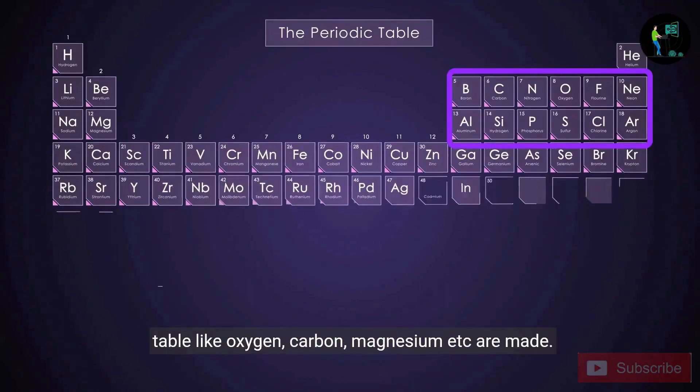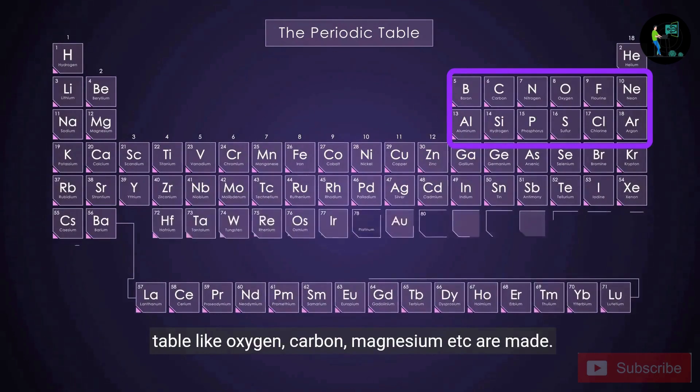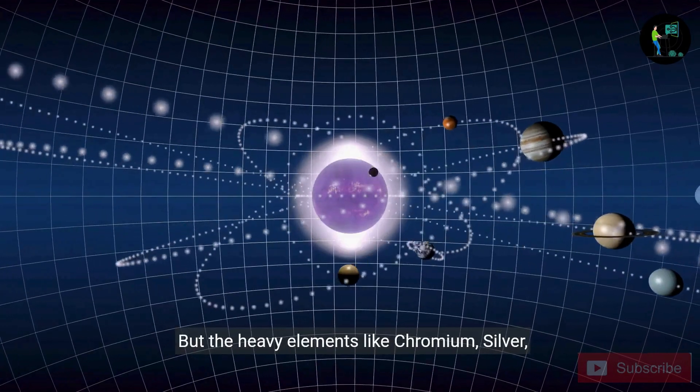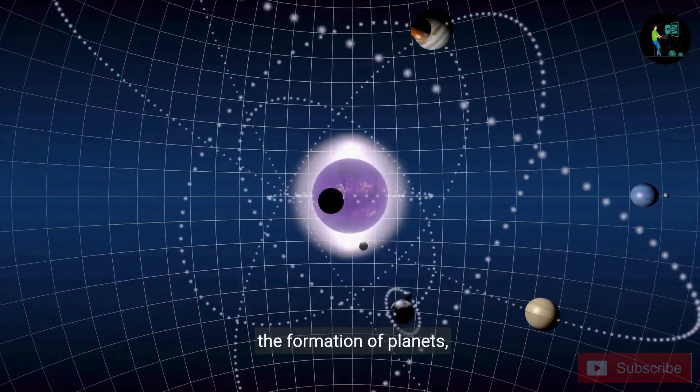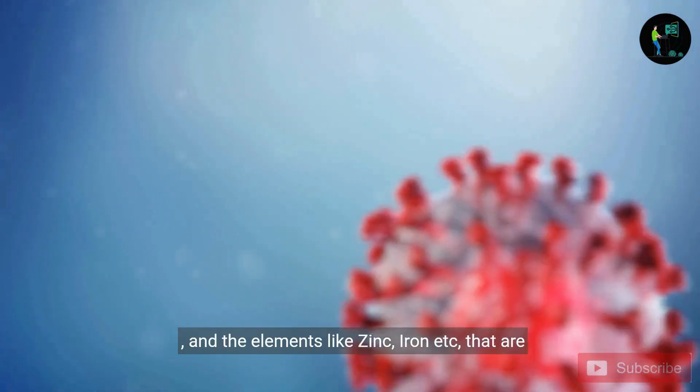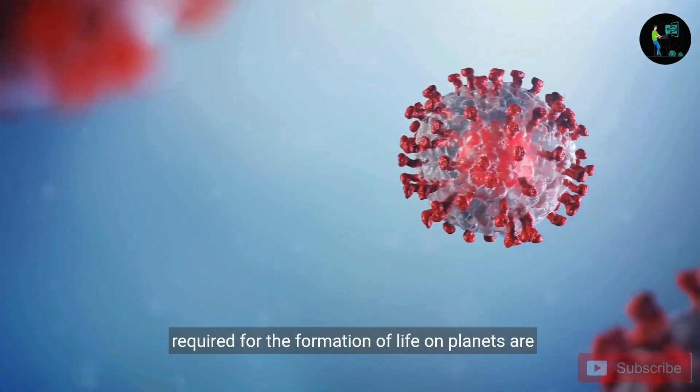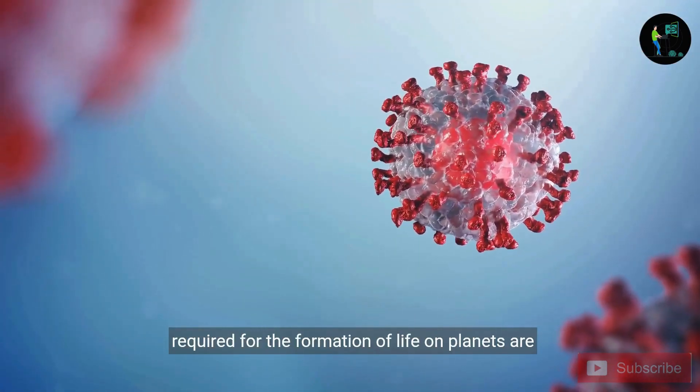Like oxygen, carbon, magnesium, etc. are made. But the heavy elements like chromium, silver, platinum, uranium, gold, etc. that are required for the formation of planets, and the elements like zinc, iron, etc. that are required for the formation of life on planets, are not yet made.